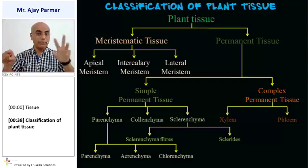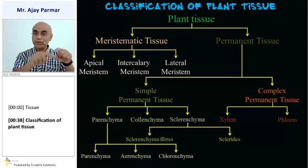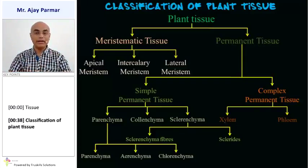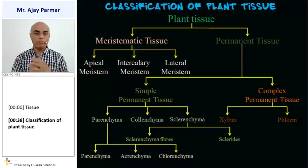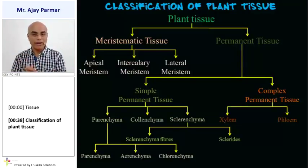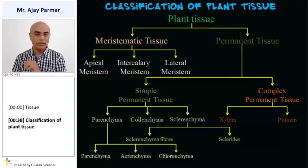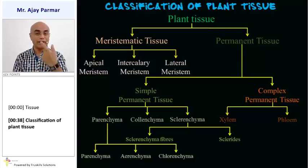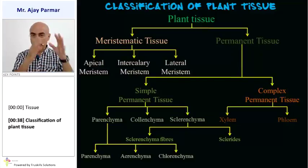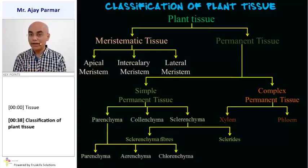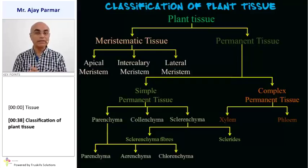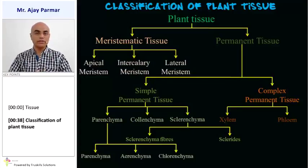To summarize: plant tissues are classified into meristematic and permanent tissue. Meristematic tissue has three types — apical, intercalary, and lateral meristem. Permanent tissue is divided into simple permanent and complex permanent tissues. Complex permanent tissue includes xylem and phloem, the conducting tissues. Simple permanent tissue includes parenchyma, colenchyma, and sclerenchyma. Parenchyma is further classified as parenchyma, aerenchyma, and chlorenchyma, while sclerenchyma includes sclerenchyma fibers and sclerids, also known as stone cells.